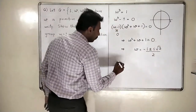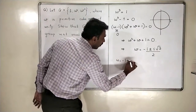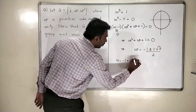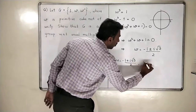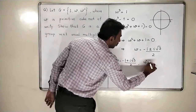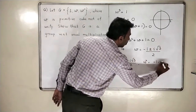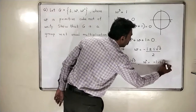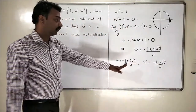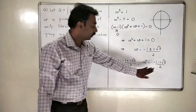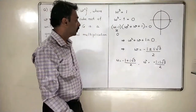We take omega as minus one plus i root three divided by two. And omega square, if we calculate, comes out to be minus one minus i root three divided by two. You can verify this calculation in your leisure time.